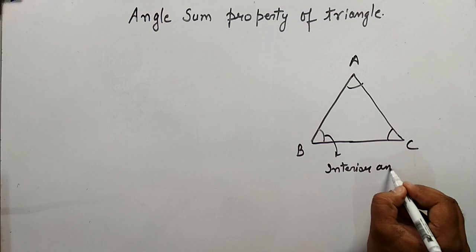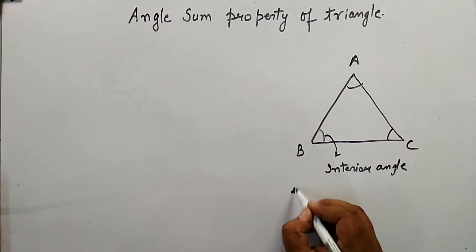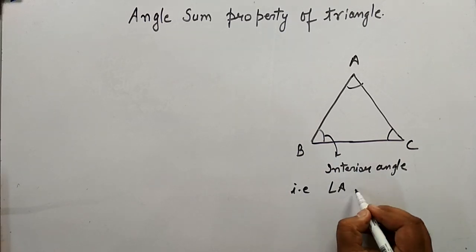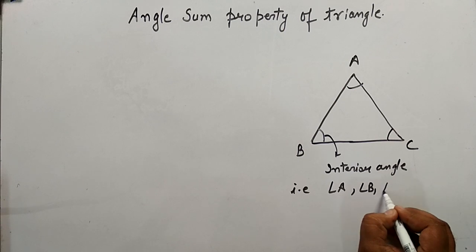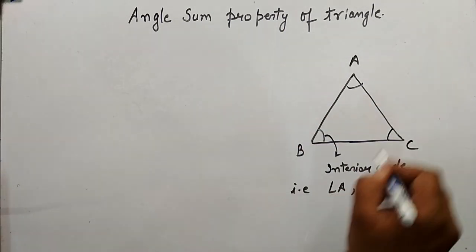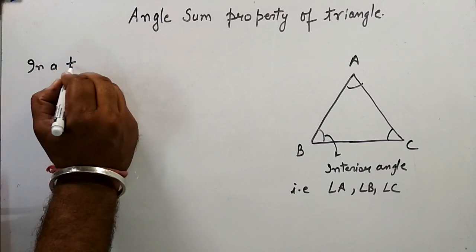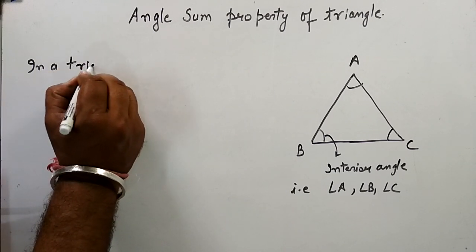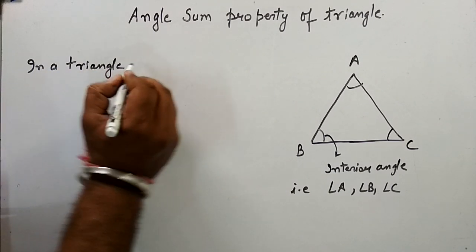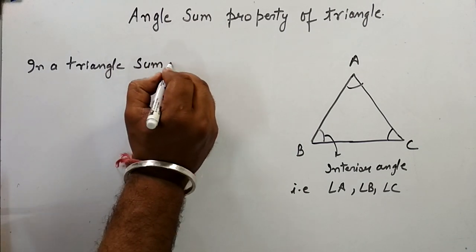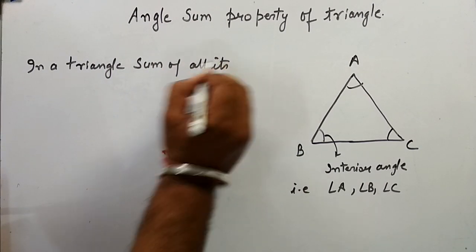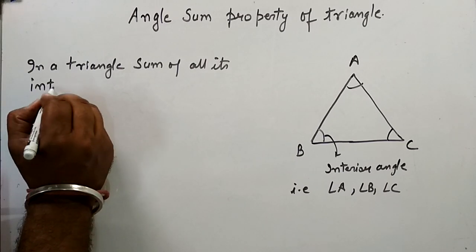Interior angles, that is angle A, angle B, angle C. These are the interior angles. So in a triangle, sum of all its interior angles...